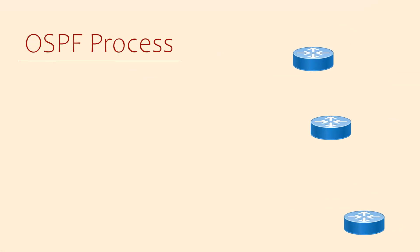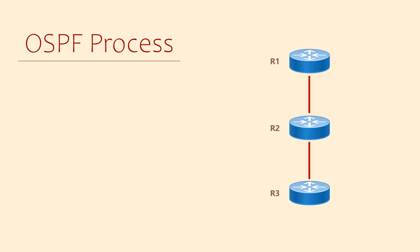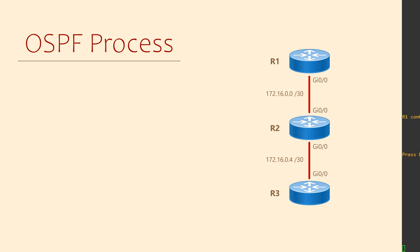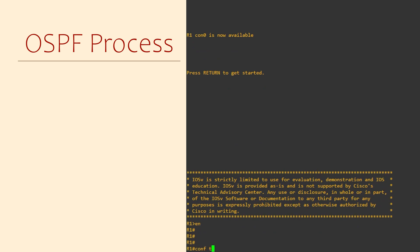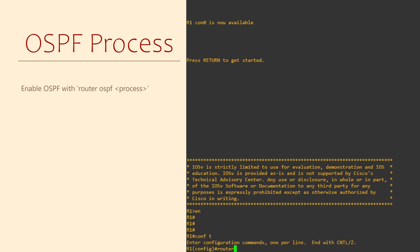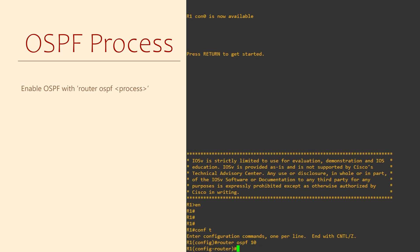All business grade Cisco routers can use OSPF, but it's not turned on by default. To turn OSPF on, we need to enable the OSPF process. The command we use is router ospf, followed by a process number. As soon as we enter this command, OSPF is running. We use the router command for all dynamic routing protocols — you could use it with EIGRP or BGP to start those processes.